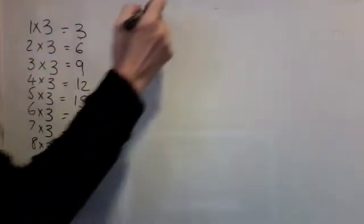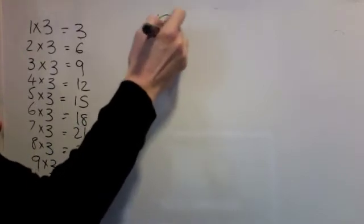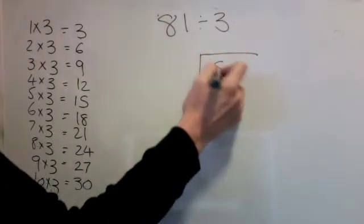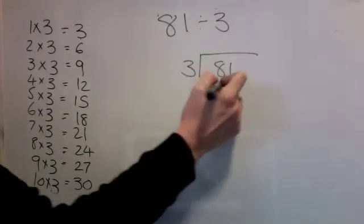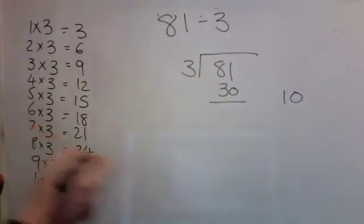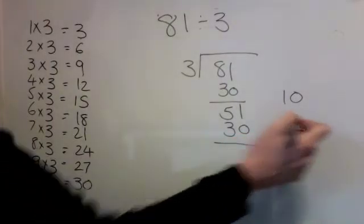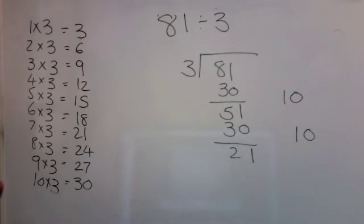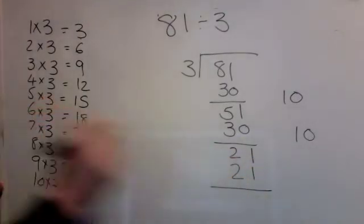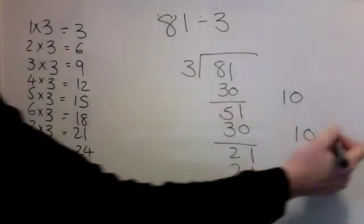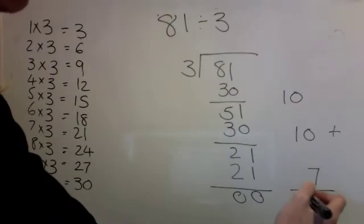Try this one. 81 divided by 3. Pause the video and have a go. Here's the answer. Bus stop — big inside and little out. Number close to 81 — it's going to be 30. 10 3's are 30. Take it away and see what's left. It's going to be 30 again — 10 3's are 30. Take it away and see what's left. 21 is in my 3 times table, and 7 3's are 21. Take it away — I've finished. Add these up: 10, 20, plus 7 is 27.